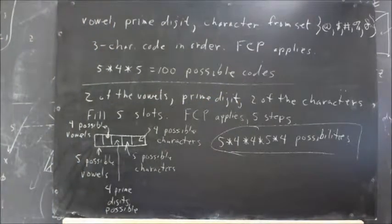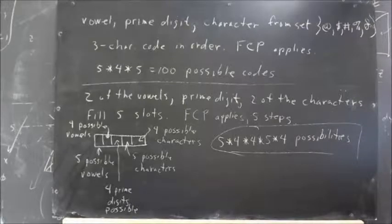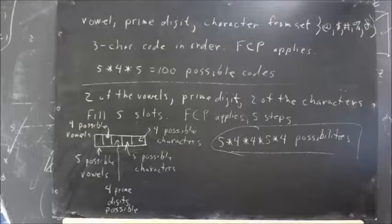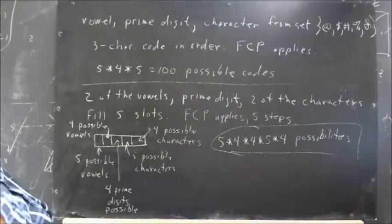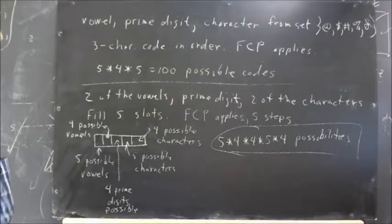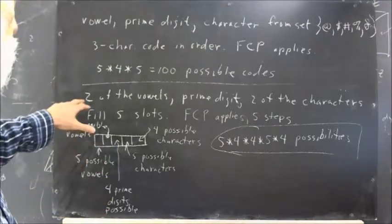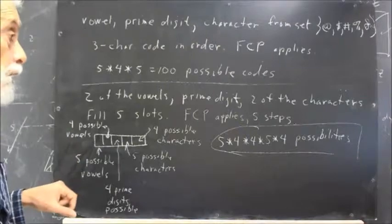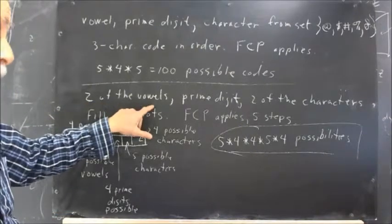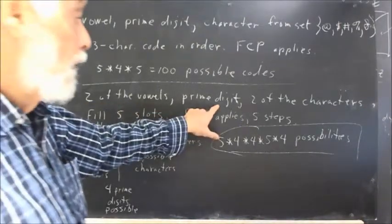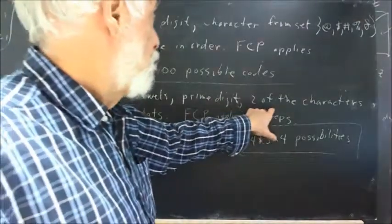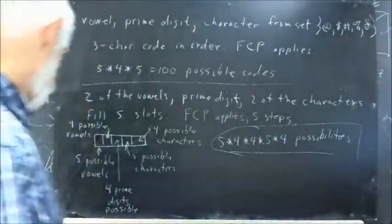Now, a later problem, and I think it's problem seven. We're choosing a five-character code this time. The first two choices will be vowels, then a prime digit, and then two of our characters.